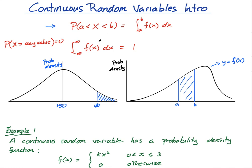The second property is that the integral of f(x), the area under the curve from negative infinity to infinity, equals one. If you remember your normal distribution, that makes sense because the total probability is one. You're rarely going to see negative infinity to infinity in most real life examples, but just be aware of this.